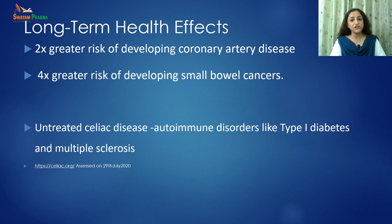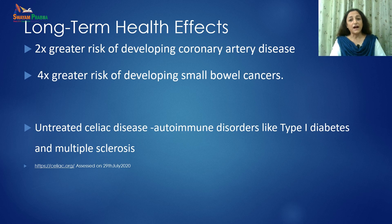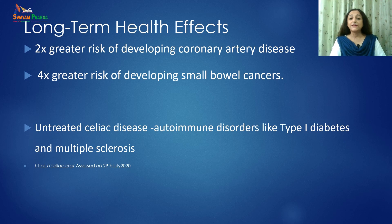Celiac disease shows peculiar features in comparison to other autoimmune disorders, where we can see complete recovery of mucosal damage as well as reversibility of the condition with total avoidance of gluten. If undiagnosed, it might have severe consequences in children and adult subjects. Long-term health effects include two times greater risk of developing cardiovascular diseases and four times greater risk of developing small bowel cancer. Untreated celiac disease can also lead to development of other autoimmune disorders such as type 1 diabetes, multiple sclerosis, and short stature among children.